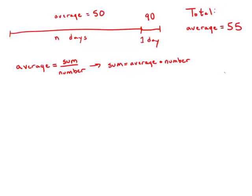For the past n days, the average daily production of the company was 50 units. If today's production of 90 units raises the average to 55 units per day, what is the value of n?